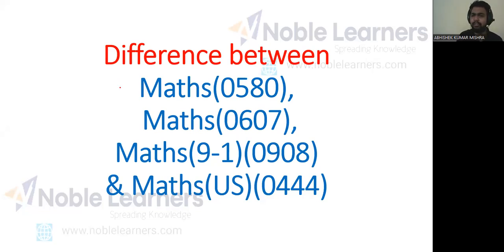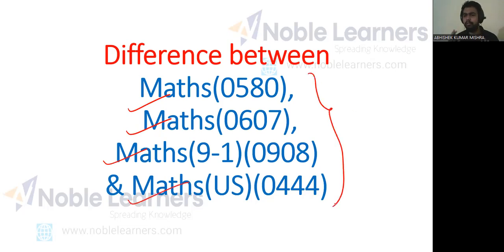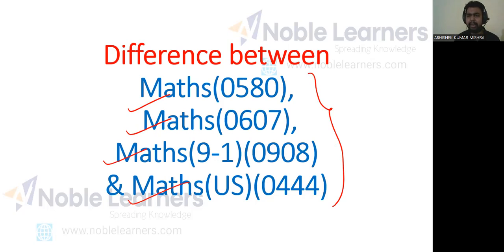Fundamentally speaking, there is no difference between Maths, Maths International, Maths 9-1, or Maths US — there is not much difference in the curriculum. The overview, the kind of questions, and the papers offered in each of them are the same. But the difference is based on location: what Maths you should choose depends on where you are living and what you are planning next. Here I am going to explain what you should opt based on your purpose and your location.